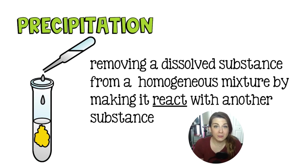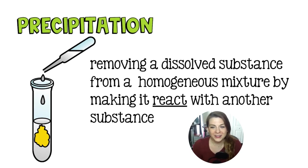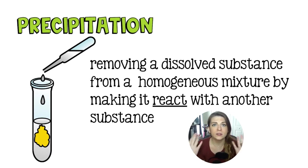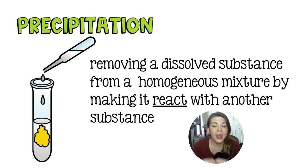If you learned separation of mixtures in middle school, you probably didn't learn this technique. This is called precipitation, and it involves an actual chemical reaction — not usually used for separating components you want to keep in their original form. It forces one component of the mixture to bond to something else, usually so you can remove it. You have two solutions with different substances dissolved in them, both starting as homogeneous mixtures, and when combined the ions swap partners in a double replacement reaction.